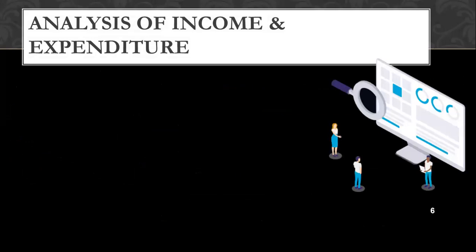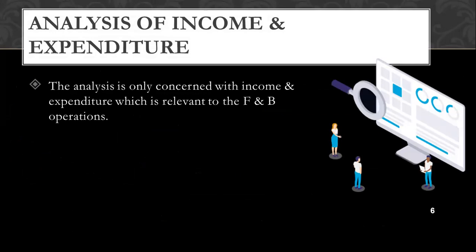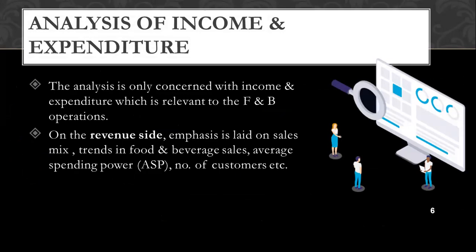The first objective is analysis of income and expenditure. The analysis is concerned with income and expenditure related to F&B operations. On the revenue side, emphasis is laid on sales mix and trends in food and beverage sales.